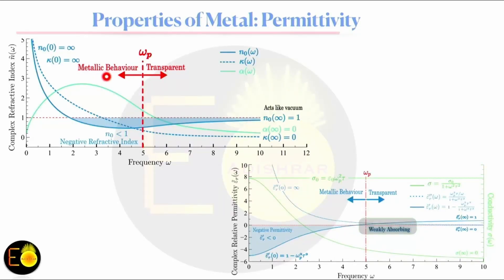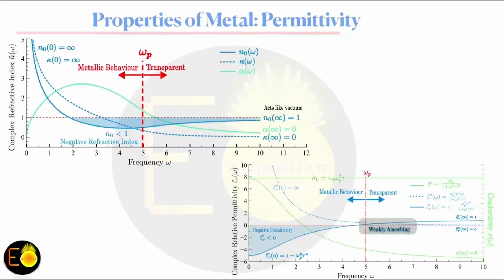In conclusion: below the plasma frequency, the metal behaves like a metal with negative permittivity and ordinary refractive index less than one. Above the plasma frequency, the metal becomes transparent to the incident wave, though slightly absorbing, with real permittivity greater than one. In the next lecture, I will demonstrate the set of equations we can form based on a dielectric-metal interface, keeping in mind that for frequency less than the plasma frequency the permittivity of a metal is negative. Till then, stay tuned. Thank you very much.